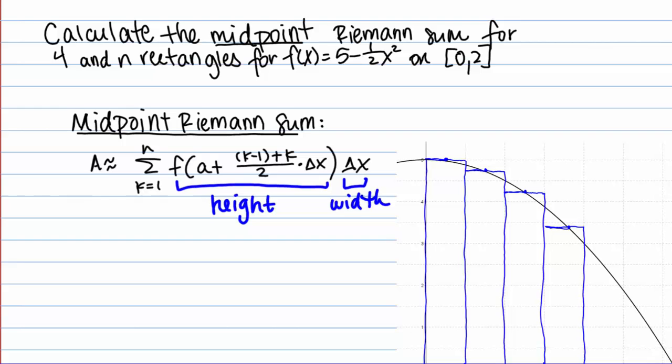Let's do an example of calculating midpoint Riemann sums. Calculate the midpoint Riemann sum for 4 and n rectangles for f of x equals 5 minus one half x squared on the interval from 0 to 2.